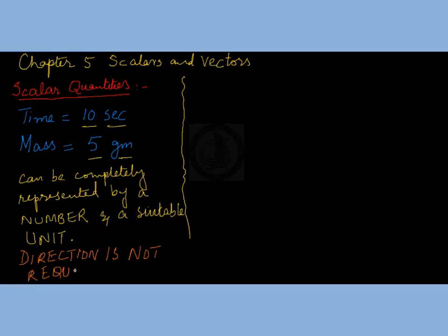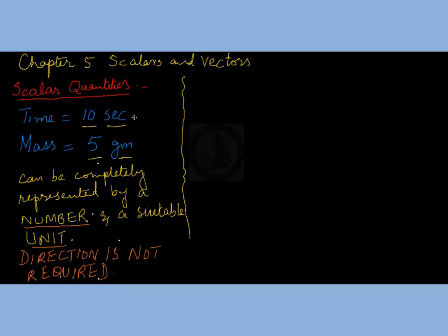Direction is not required — only a number and a suitable unit give a complete representation of a scalar quantity. For example, 10 seconds is completely representing the quantity time, and 5 grams is completely representing the physical quantity mass. Now if we talk about vector quantities...